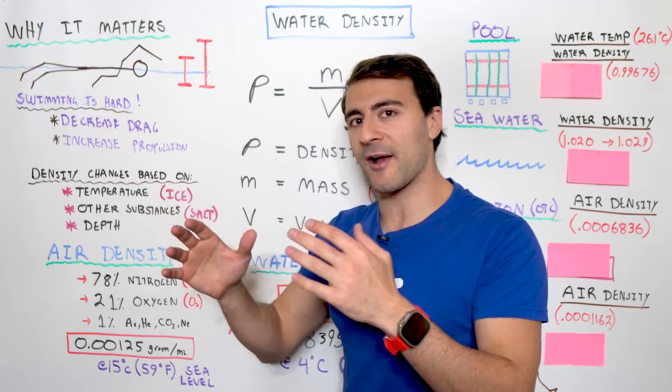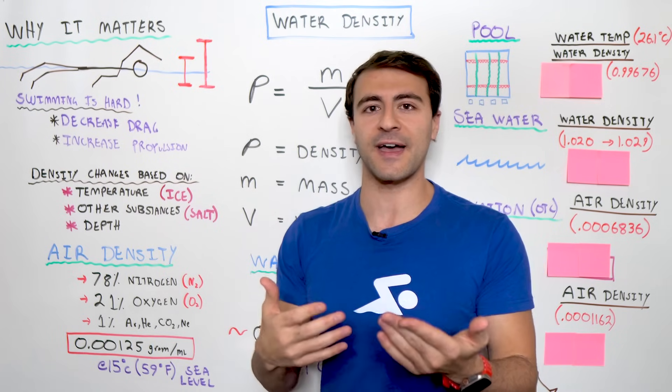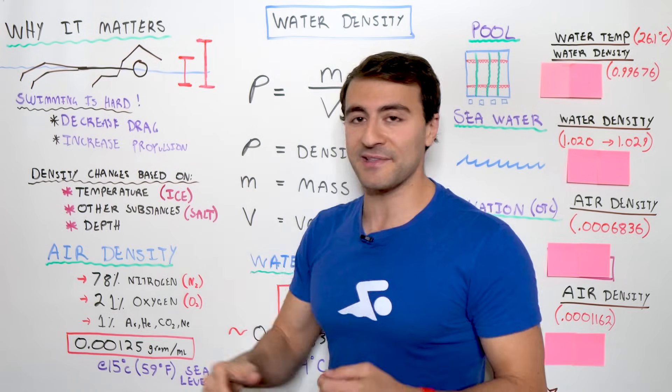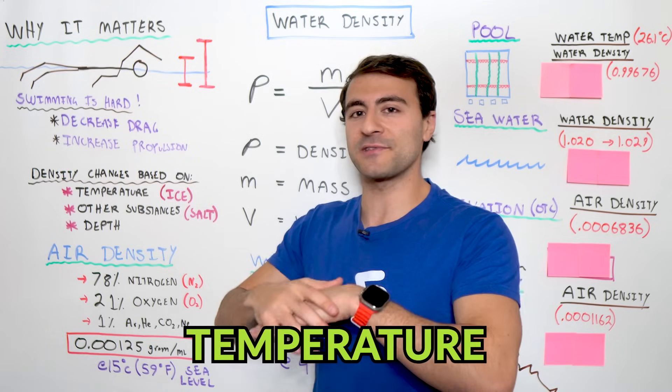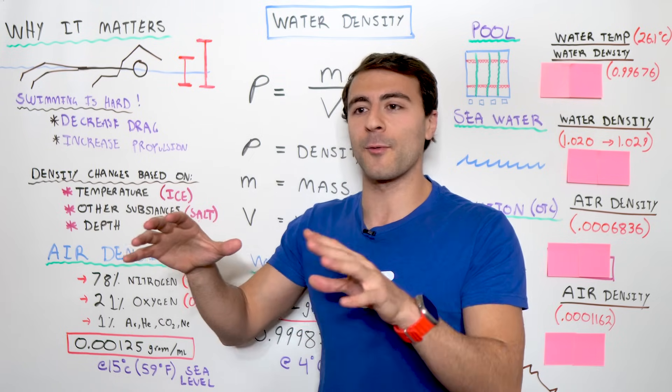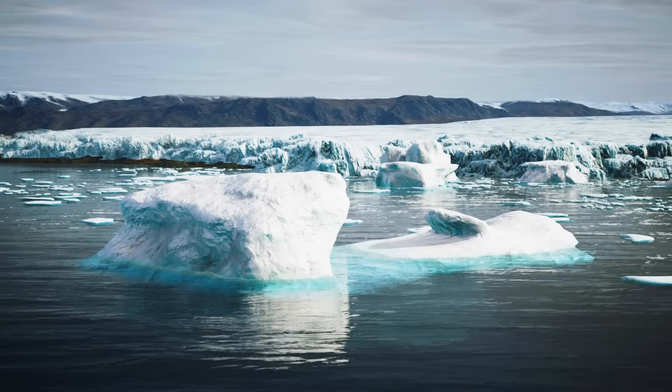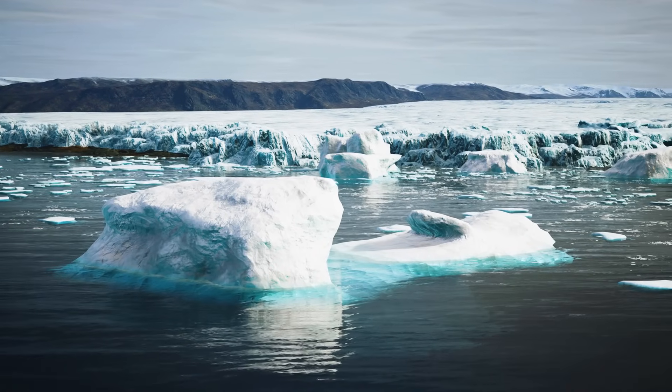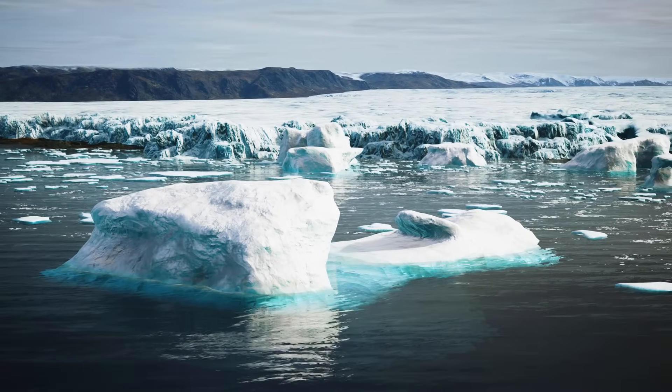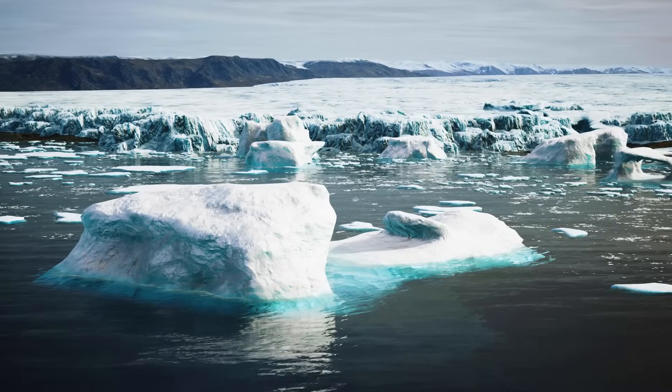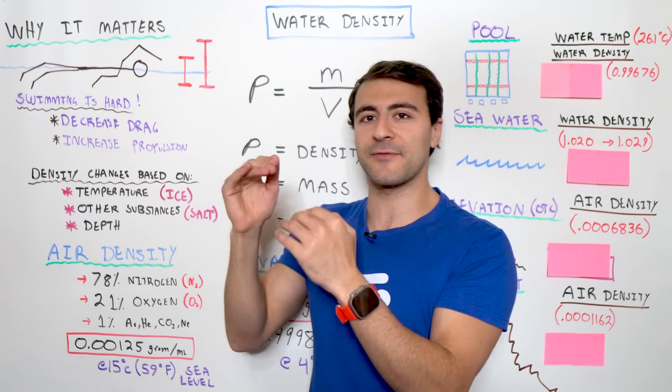The density of water and even air changes based on a few different factors. So, it can change based on temperature. This is why when you see icebergs floating out in the water, the ice, which is just water frozen, is actually above the water. Now, most of the iceberg is actually under the water, but you get what I'm saying. The ice doesn't sink to the bottom and that has to do with the difference in density.